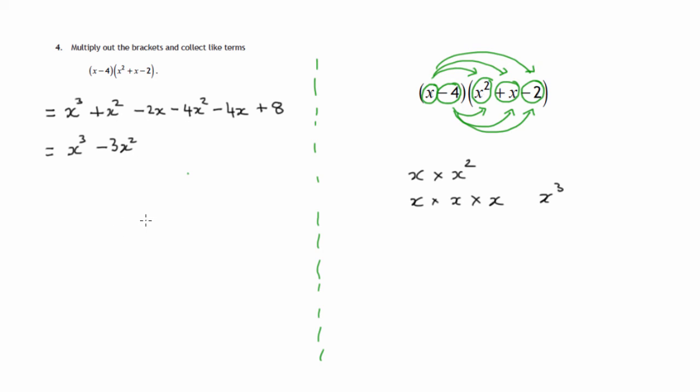The x terms, there's a couple of x terms here. Negative 2 and another negative 4 of them. So negative 2 minus 4 is minus 6, so minus 6x. And the constant at the end, plus 8. So we've got x cubed minus 3x squared minus 6x plus 8.